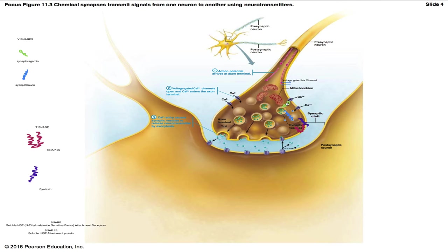Looking at synaptotagamin, you'll notice there are two circular regions. The one on top is called the C2B region, and the one on the bottom is the C2A region. The C2A region is going to bind to calcium, and the C2B region is going to interact with syntaxin.